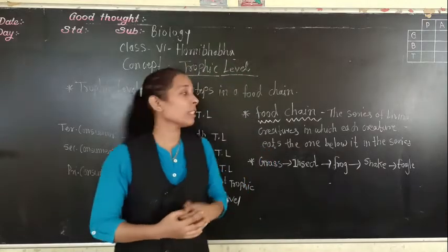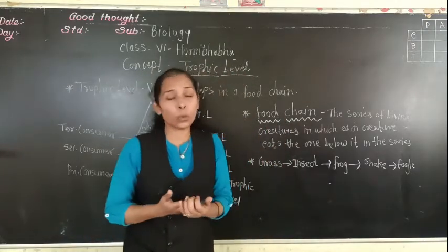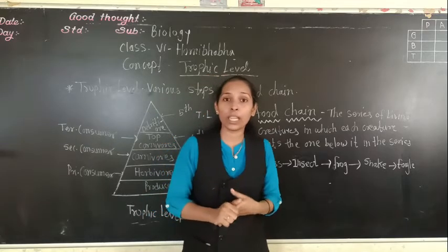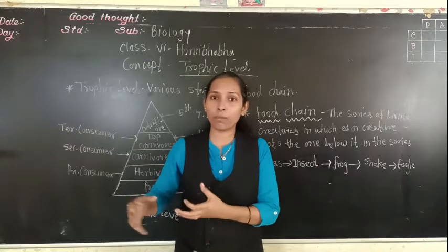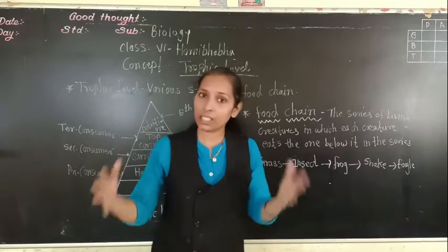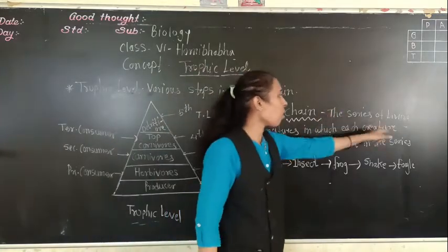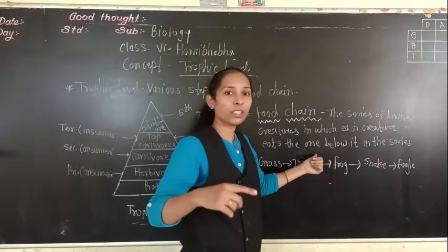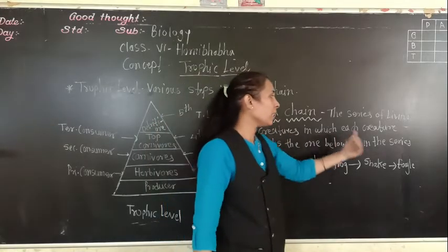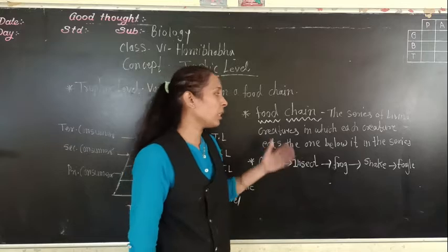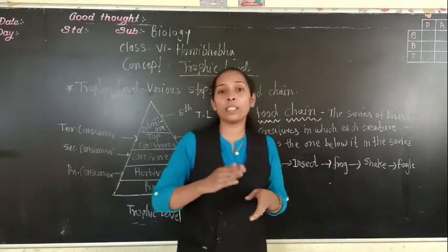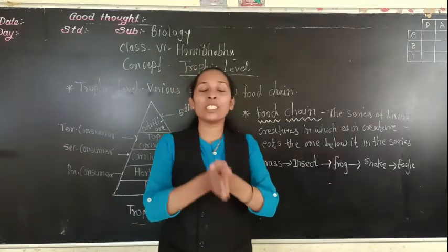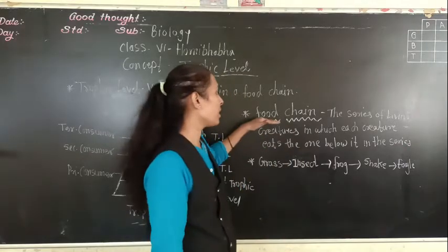Before going to see the trophic level, we will discuss what a food chain is - a concept we have already seen. So what is meant by the food chain? A food chain is the series of animals, or the series of living creatures, in which the living creatures eat and other living animals below them are eaten by others in a series. Each and every animal depends on each other for their food, and that web is also called a food web or food chain.